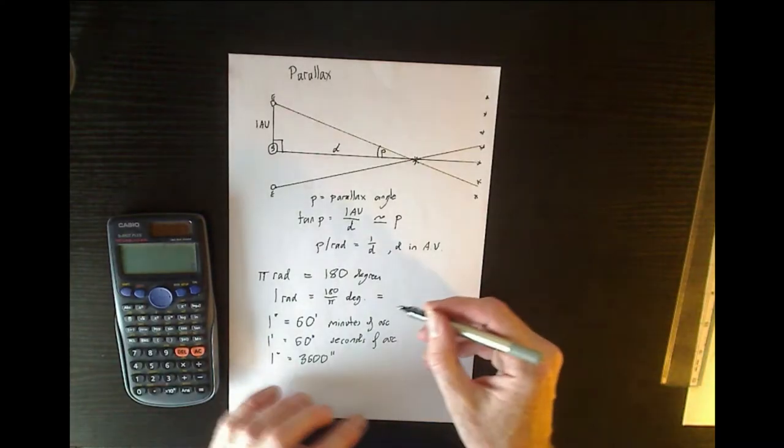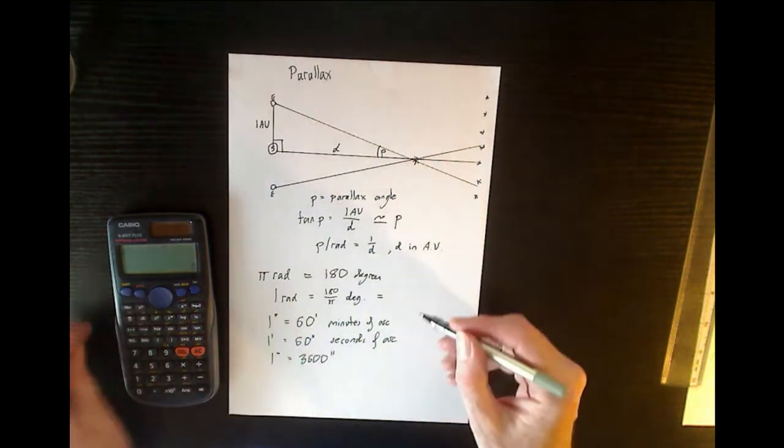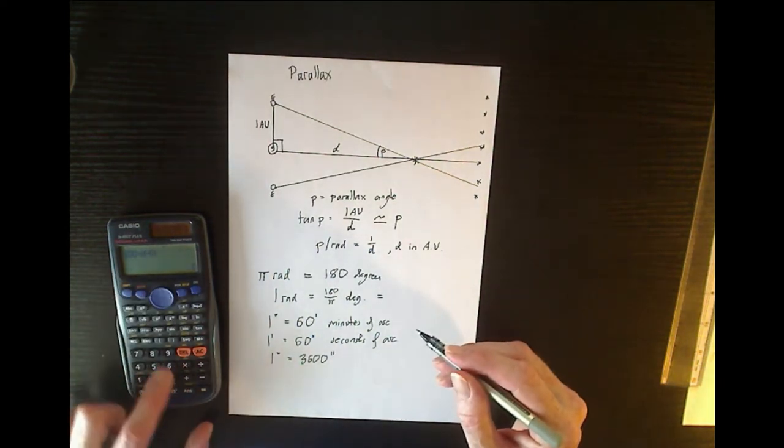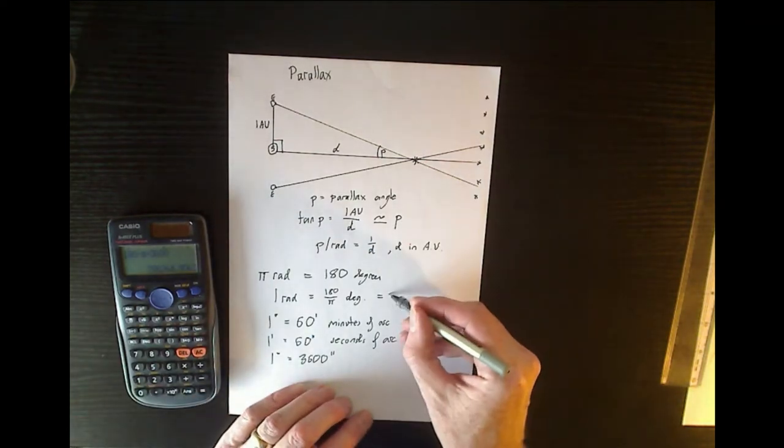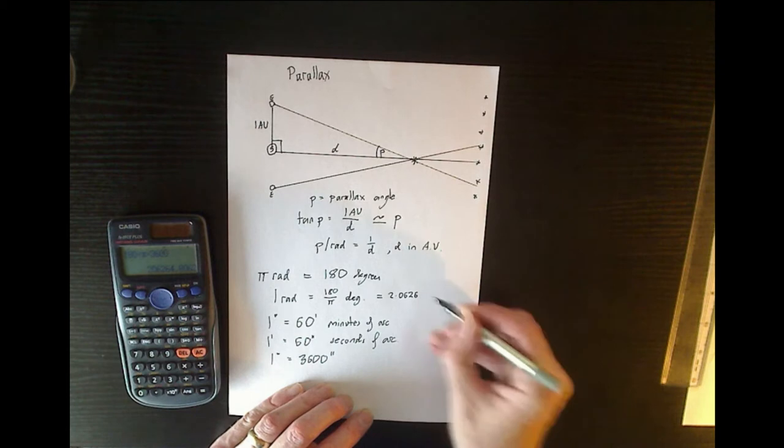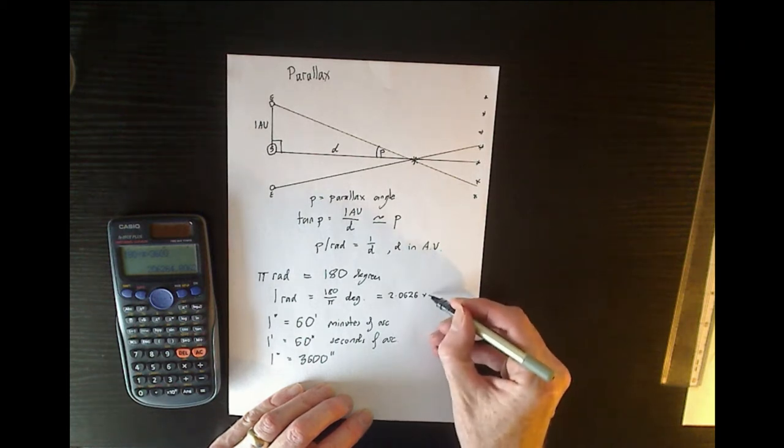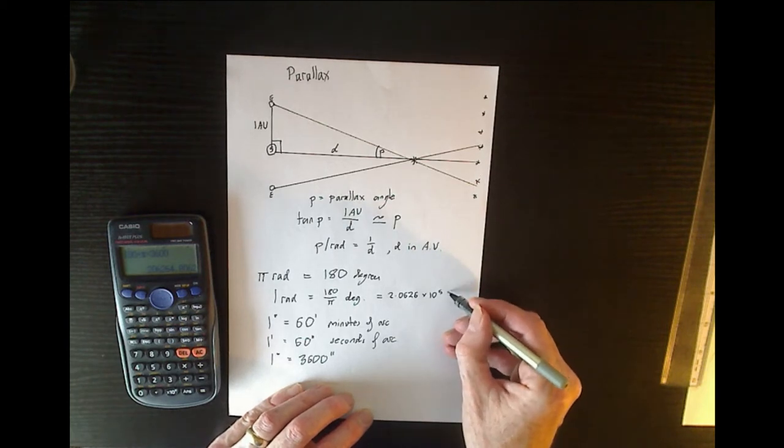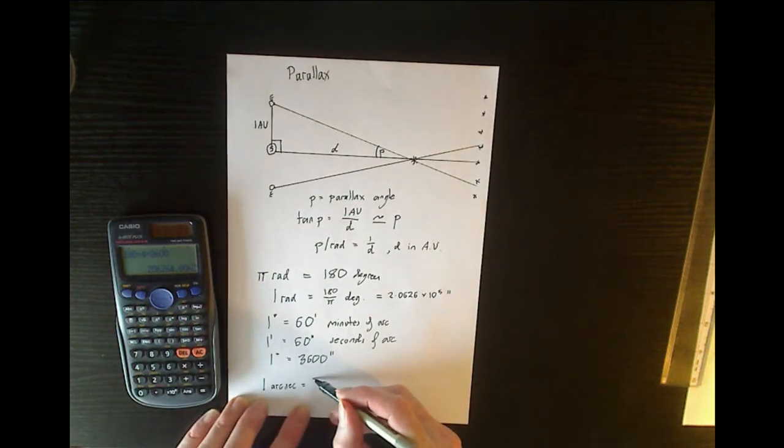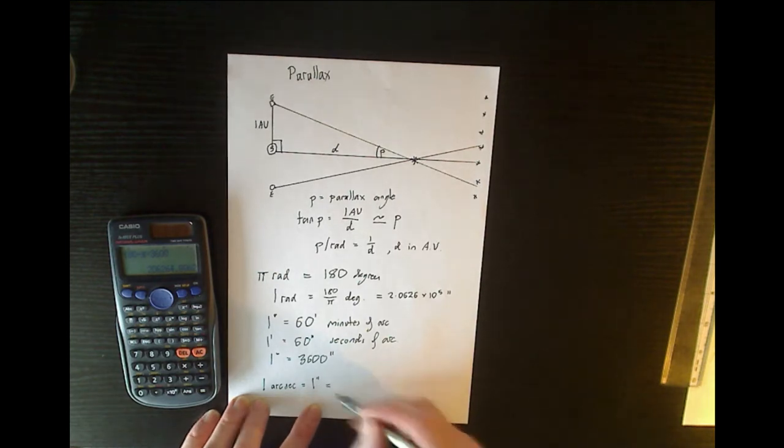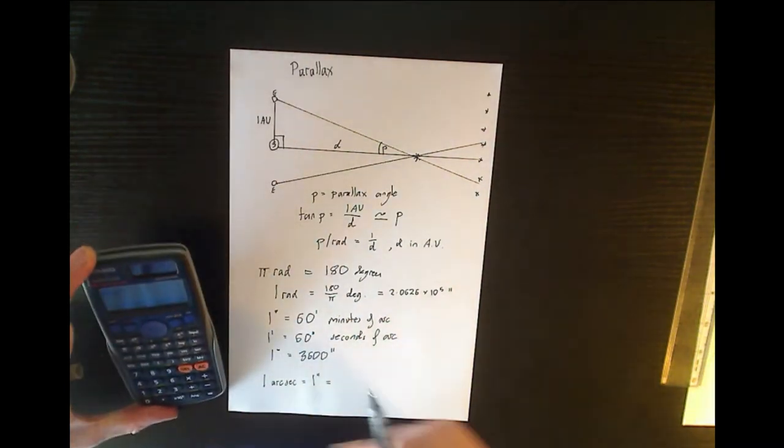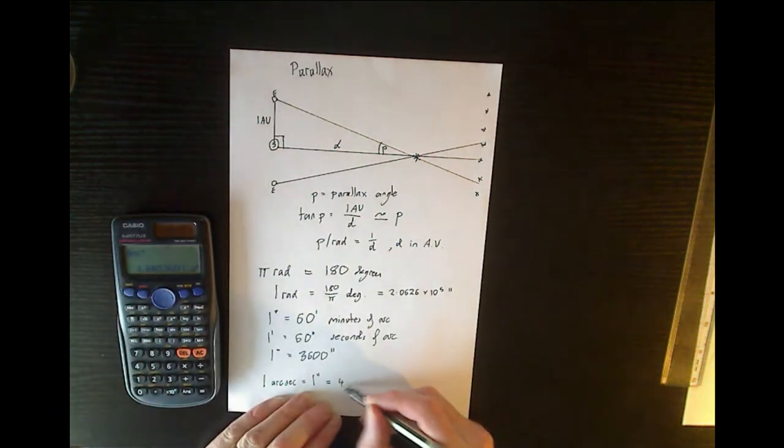So one radian is 180 divided by pi degrees. If I multiply that by 3600, that gives me one radian equals 2.0626 times 10 to the power of 5 arc seconds. So one arc second, which can be written as one arc sec, is the reciprocal of that, which is 4.848 times 10 to the minus 6 radians.